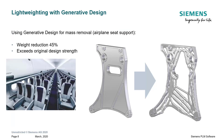Here's an example of using generative design for mass removal. This airplane seat support was able to experience a weight reduction of 45 percent and yet exceed the original design strength, simply by using generative design — even though the part was originally made of aluminum, which is already a lightweight material. We were still able to reduce that by 45 percent.